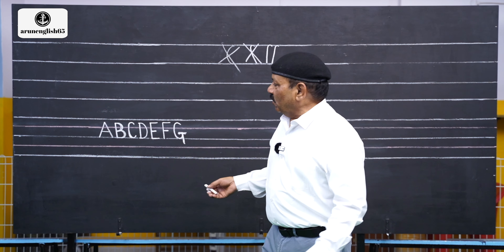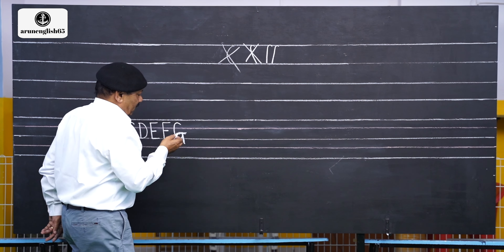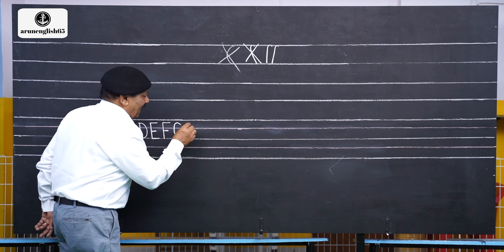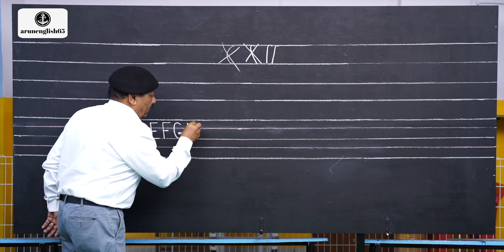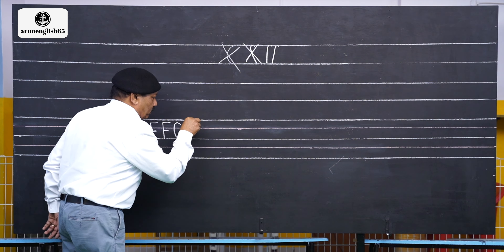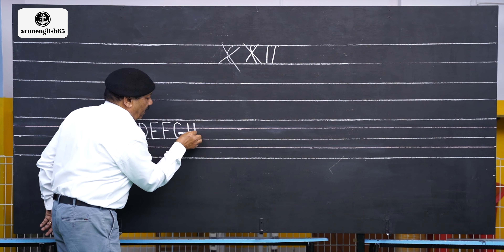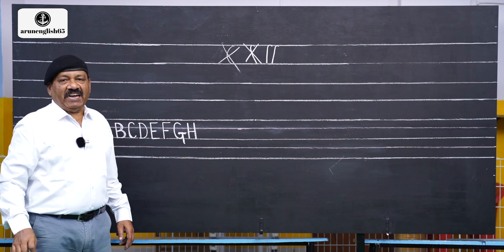So, let us go ahead again. G, H. Draw two lines like this, and write in the middle — it is H.